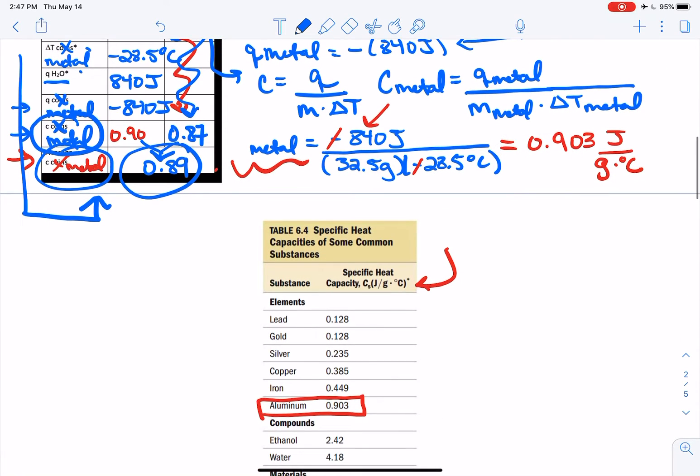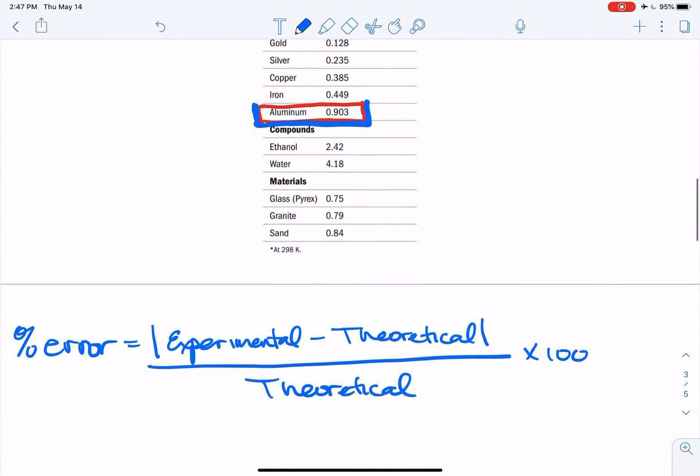Now I told you that we had an aluminum block and the theoretical, or in theory what we should get, value for our specific heat capacity of aluminum is 0.903. Now we can look at this and go, woo, we got pretty close so we're doing well, but let's go ahead and do the calculation.